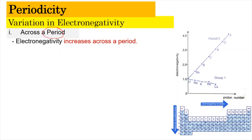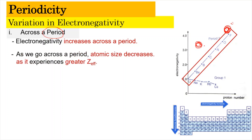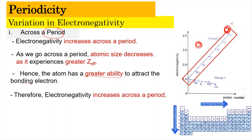So across a period, electronegativity increases. This is because the proton number increases across the period. When the proton number increases, the effective nuclear charge increases, and hence the valence electrons are pulled more strongly to the nucleus. This causes the atom to shrink and the atomic radii become smaller. Since the size gets smaller, it is easier to attract electrons towards itself. So as we go across a period, atomic size decreases as it experiences a greater effective nuclear charge, giving it a greater ability to attract bonding electrons. As a result, electronegativity increases across the period.